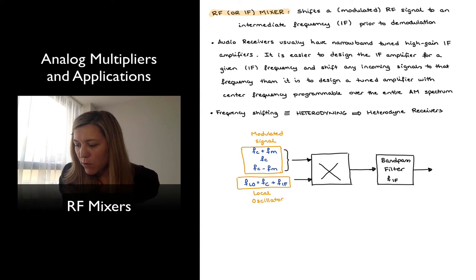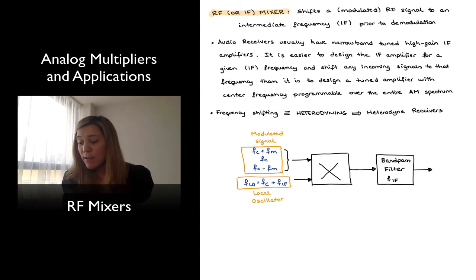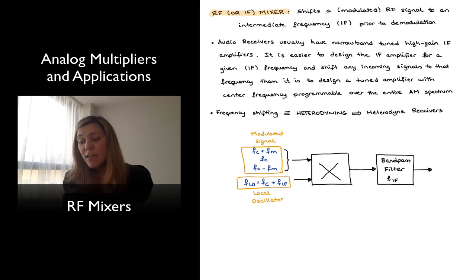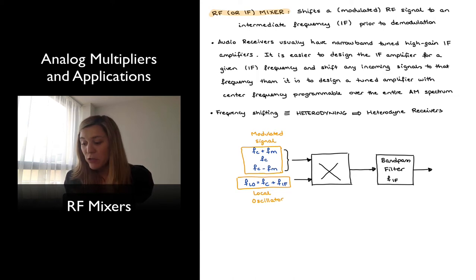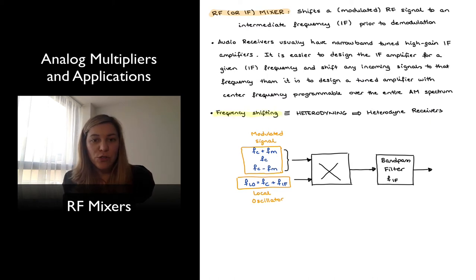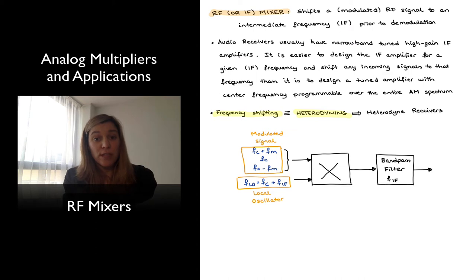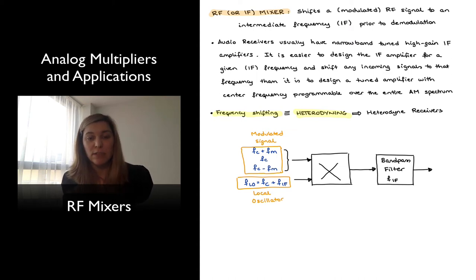Audio receivers usually have narrowband tuned high-gain IF amplifiers, and it is easier to design the IF amplifier for a given frequency — the IF frequency — and shift any incoming signals to that frequency, than it is to design a tuned amplifier with center frequencies adjustable over the entire AM range. This frequency shifting process is also referred to as heterodyning, and the receivers that use this process are therefore referred to as heterodyne receivers.